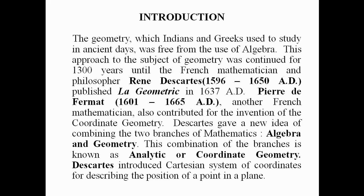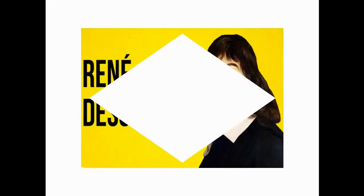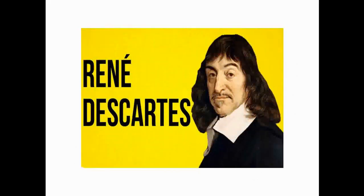Descartes introduced the Cartesian system of coordinates for describing the position of a point in a plane. This is the picture — this is René Descartes, who is the first mathematician who gave the idea of coordinate geometry.